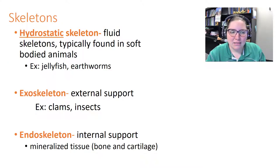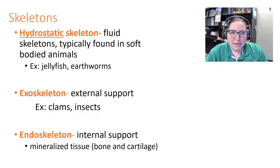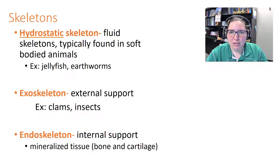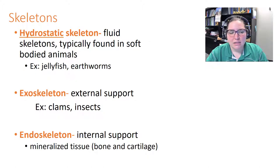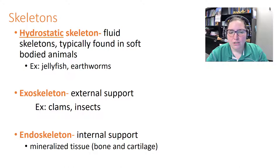Different kinds of organisms have different skeletons. A hydrostatic skeleton is fluid-based, typically found in soft-bodied animals like jellyfish or earthworms. An exoskeleton offers external support, as in insects or clams. An endoskeleton contains mineralized tissue like bone or cartilage and offers internal support — endo meaning inside, exo meaning outside.